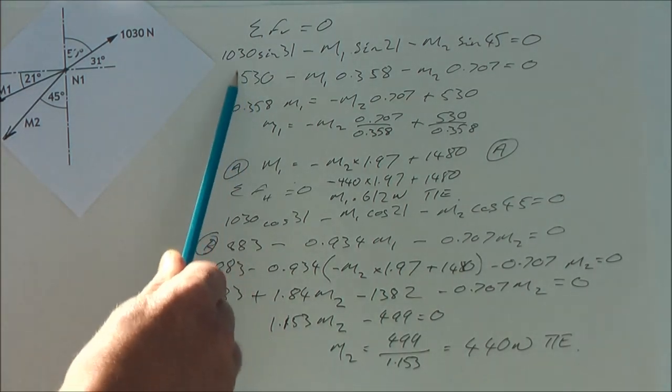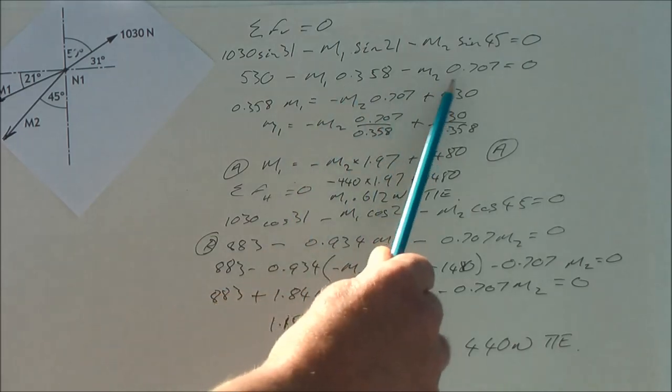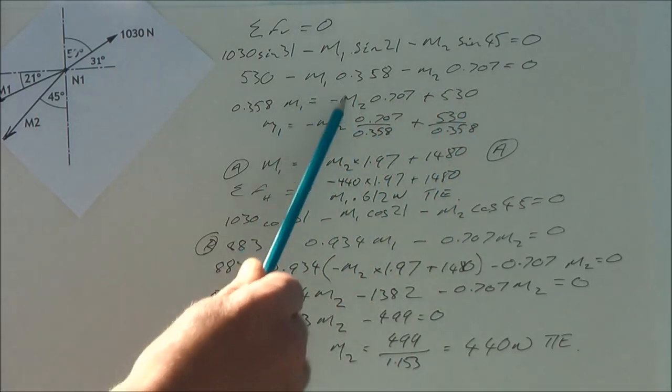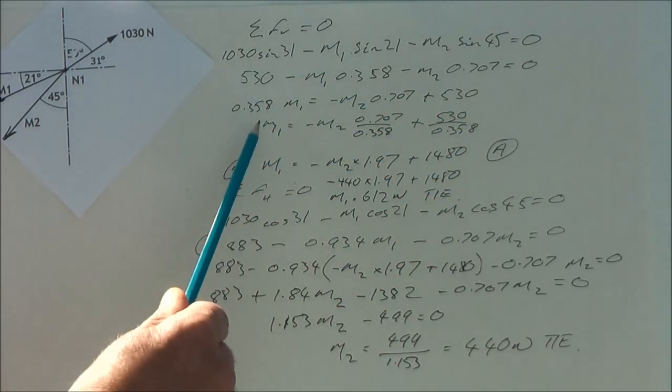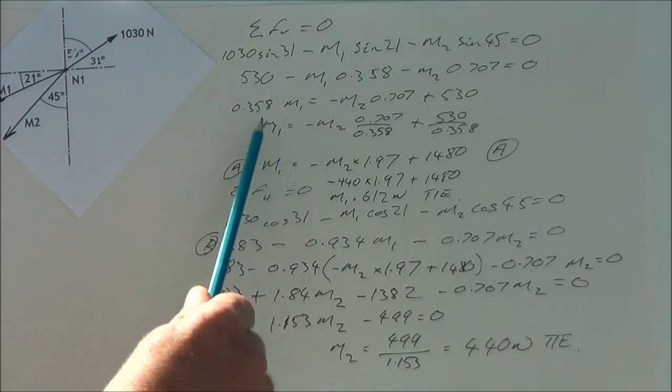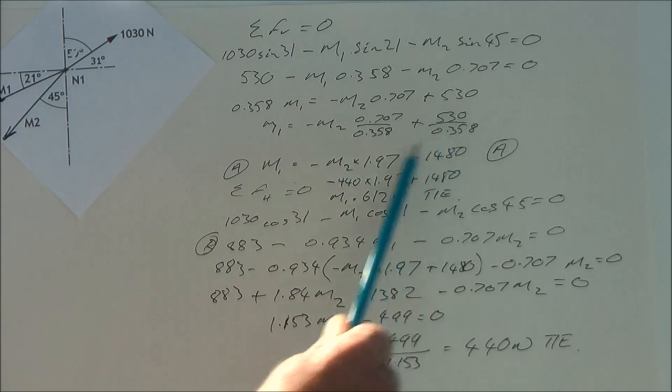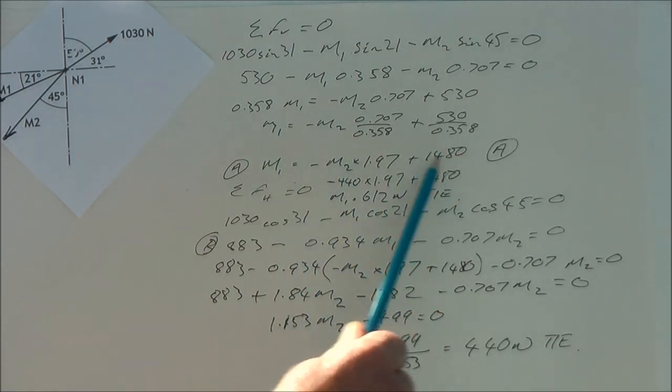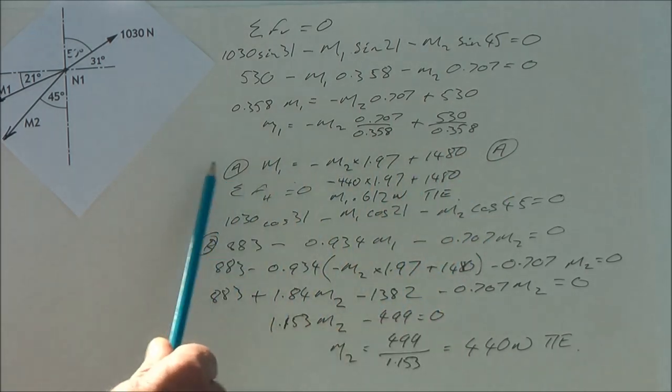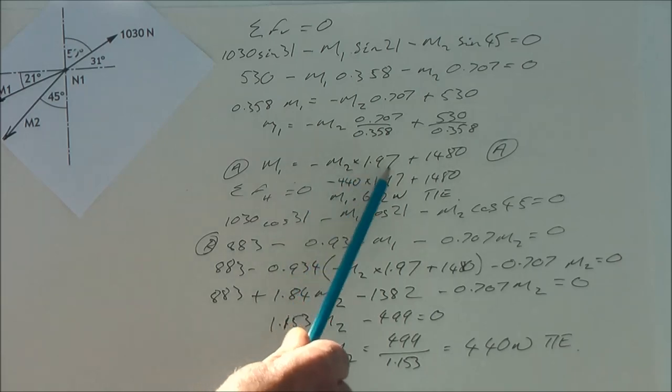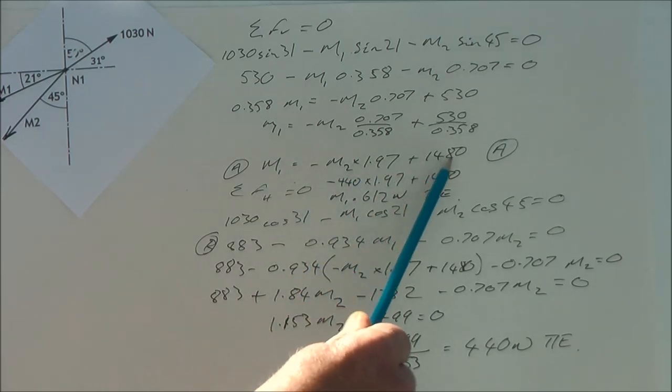I start pressing the calculator. That's 530.358707. I've taken M1 across the other side and then divided by the 0.358. I press the calculator again. So I've got what I've called equation A: M1 equals minus M2 times 1.97 plus 1480.